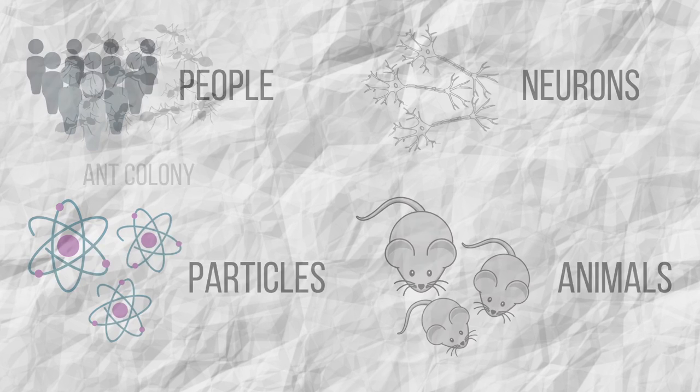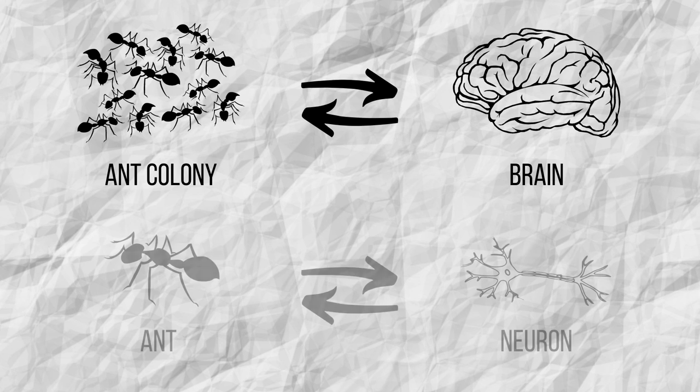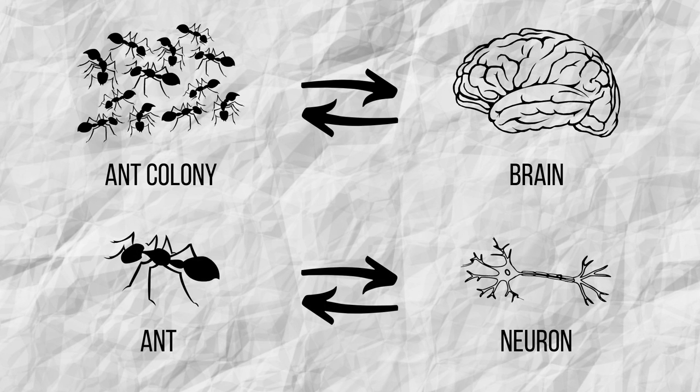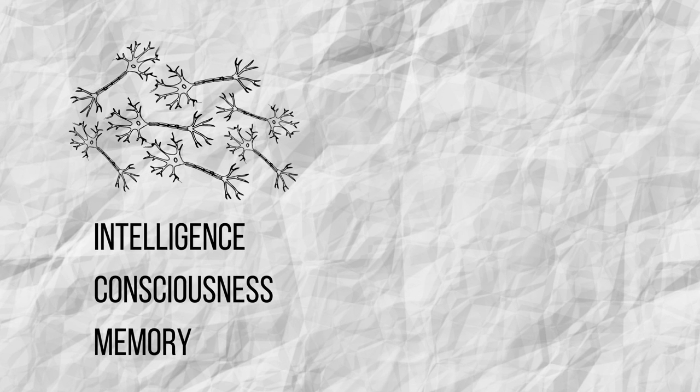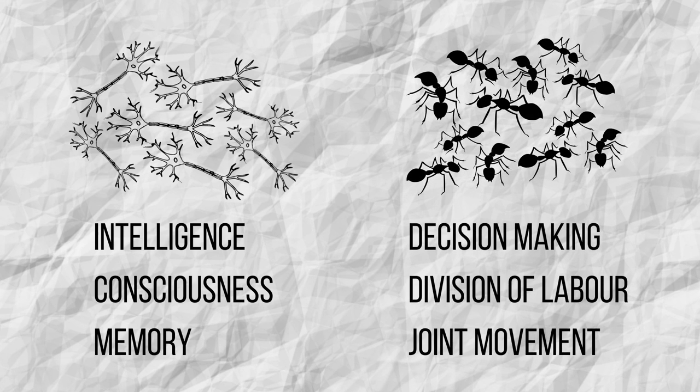For example, we can draw an analogy between a colony of ants and a brain. In the analogy, an ant plays the same role as a neuron. At the beginning of the video, we told you that large clusters of neurons give rise to cognitive functions. The same thing happens in an ant colony. Thanks to their interactions, the colonies make decisions, divide up work, and move together.